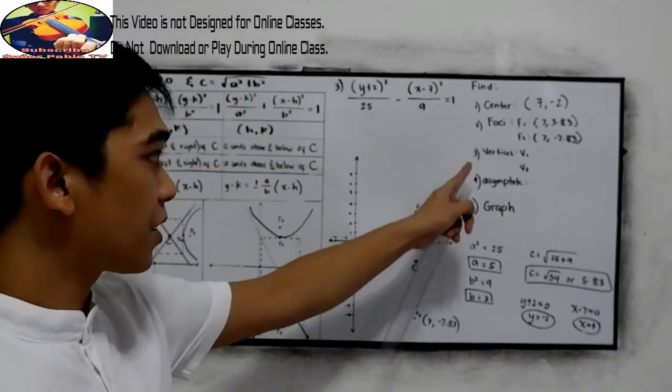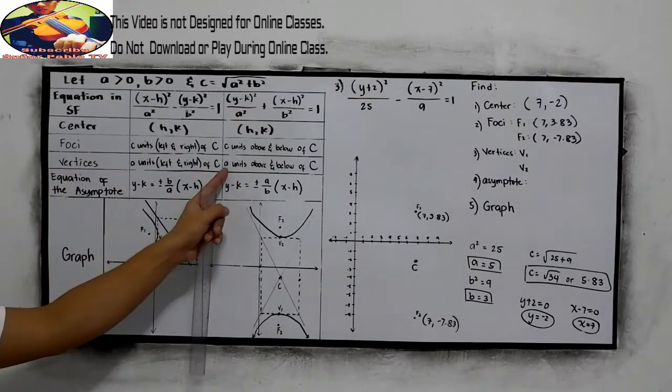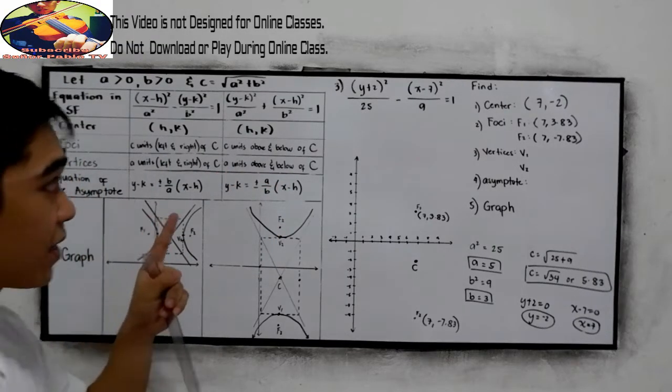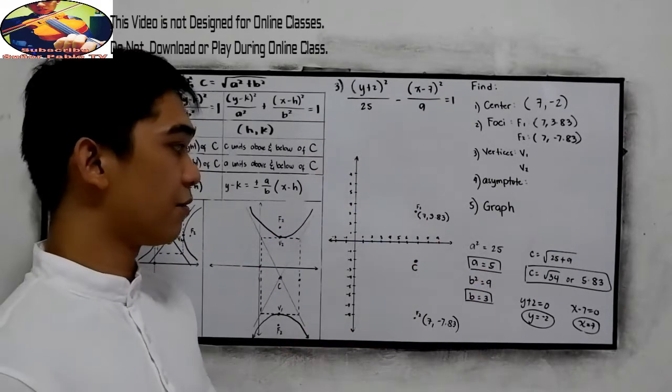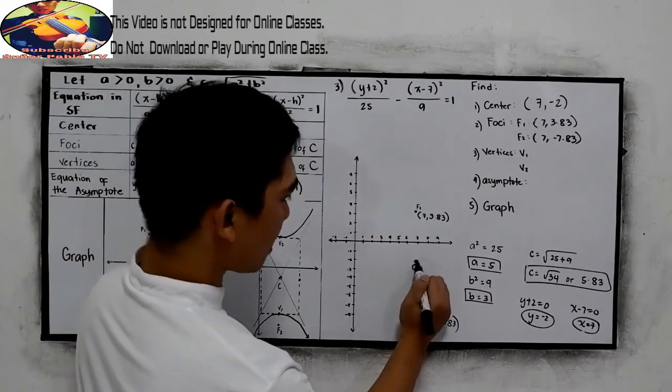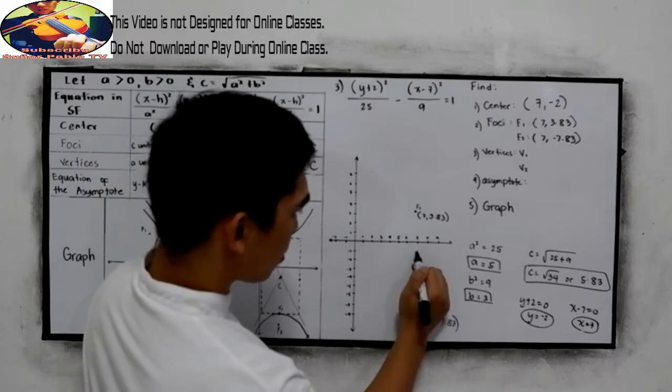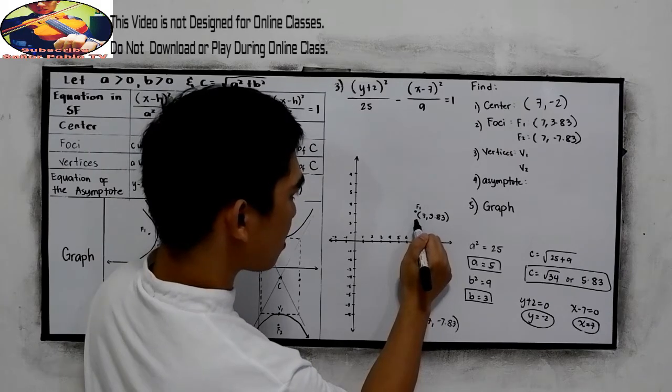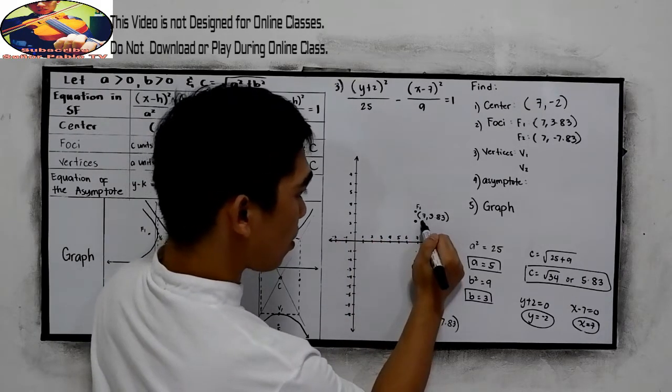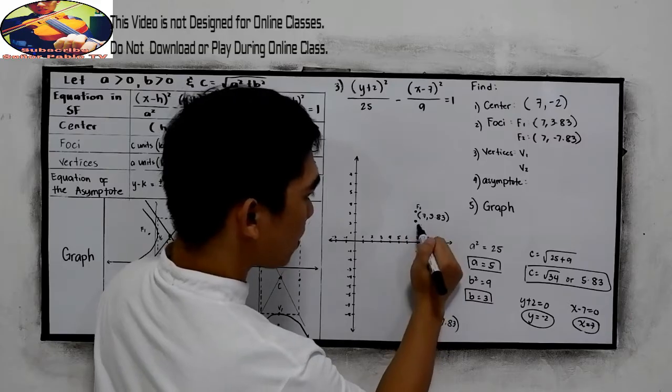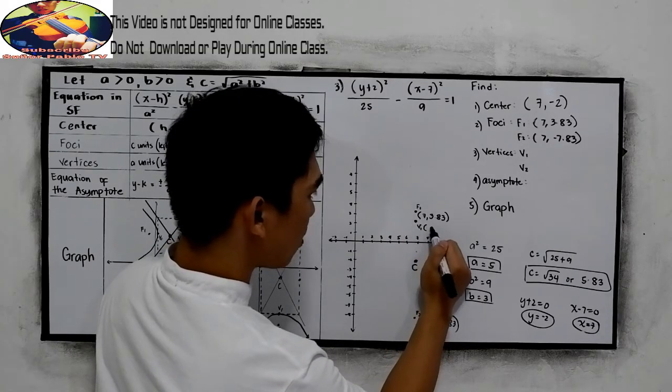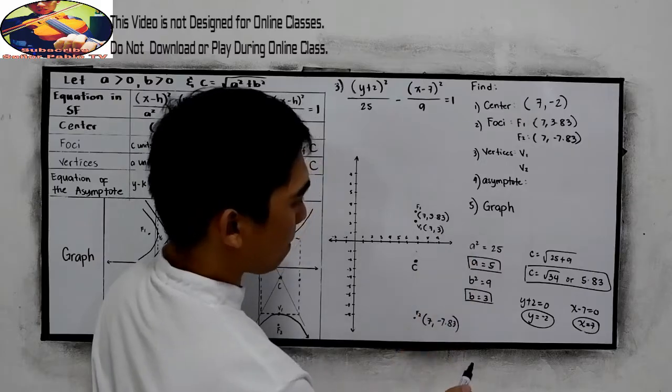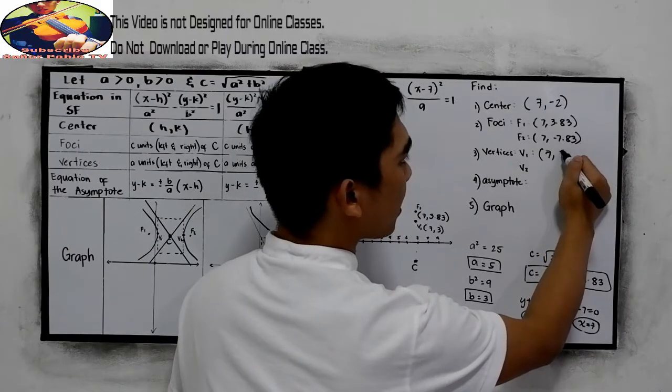Next, the vertices. So for the vertices, that is a units above and a units below of x. Our a is 5. So let us count 5 units. 1, 2, 3, 4, 5. So it's 1, 3. So the coordinates of that, let's say this is our vertex 1. The coordinates is 7 and that is exactly 3. And it's right here, 7, then 3.